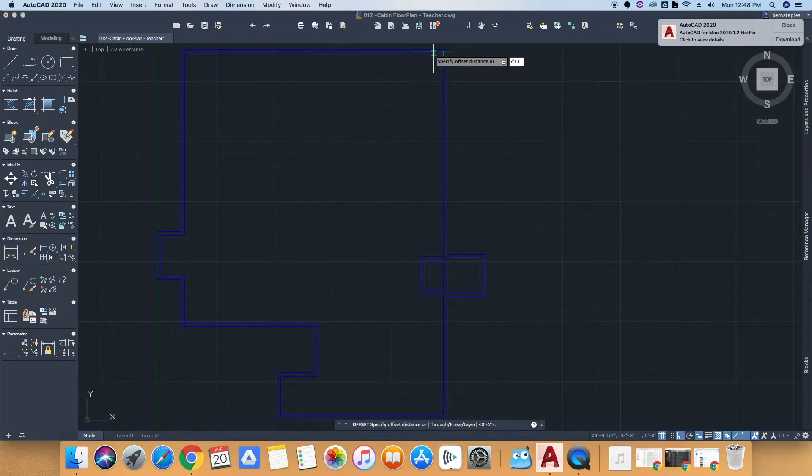I just use the offset command to get the locations, usually it's from the outside corner of an exterior. Just double check where the dimensions are located to get your wall locations.